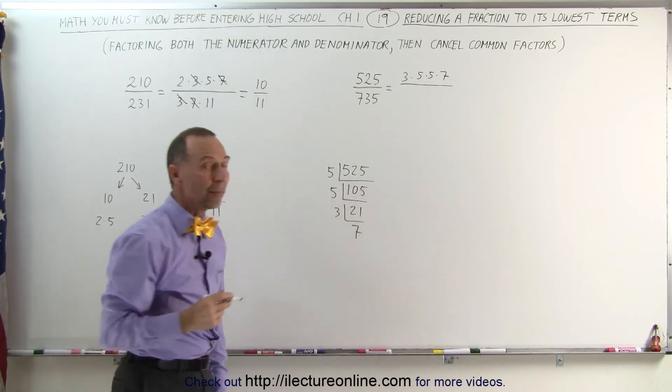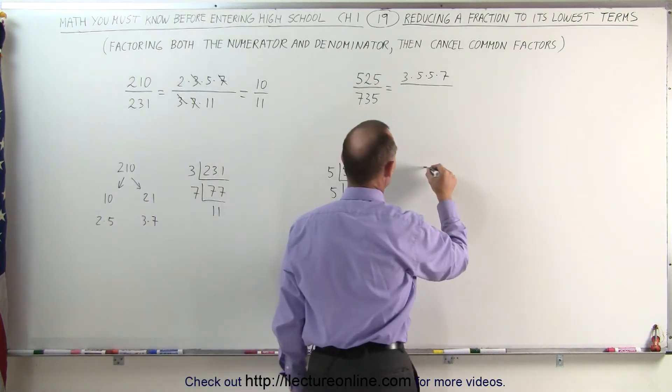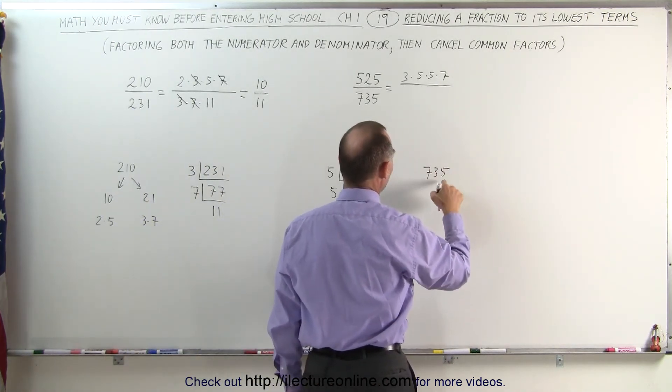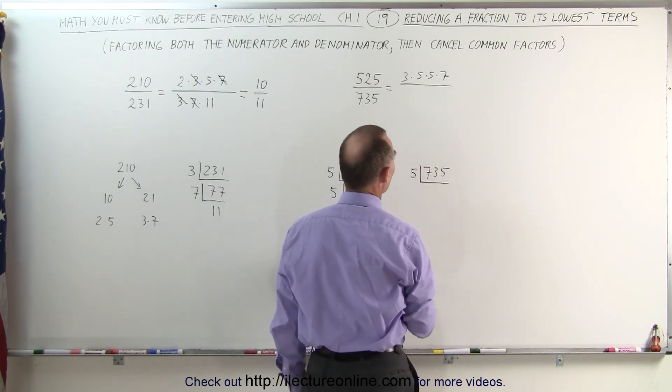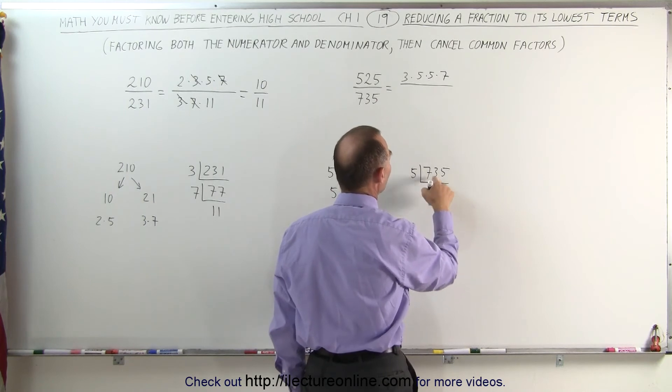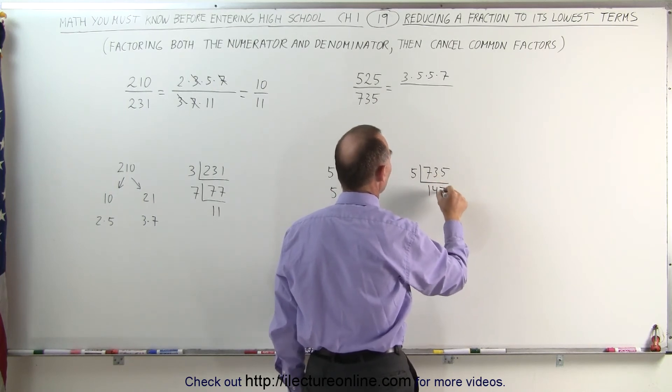Now we do the same with the denominator. We take the number 735, and again, since it's ending in a 5, we're going to divide this by 5. 5 goes into 700, that's 140 times, plus 7, that's 147 times.